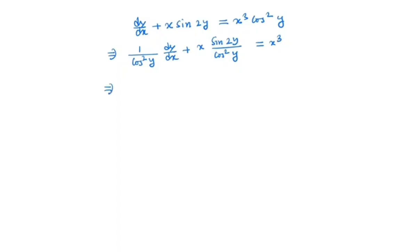So 1/cos² y is nothing but sec² y dy/dx, and sin 2y is nothing but 2 sin y cos y, divided by cos² y is 2 sin y/cos y which is 2 tan y.